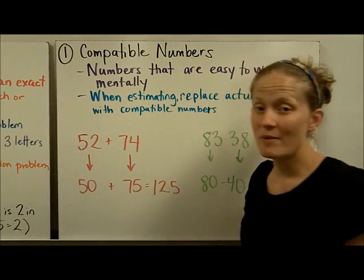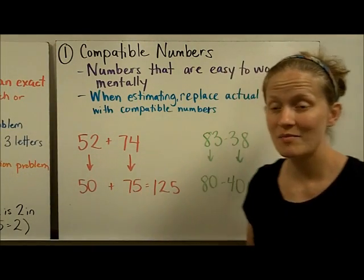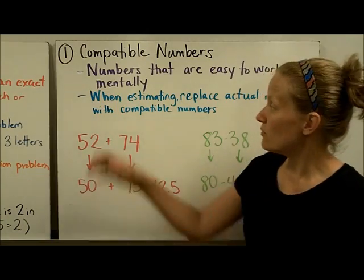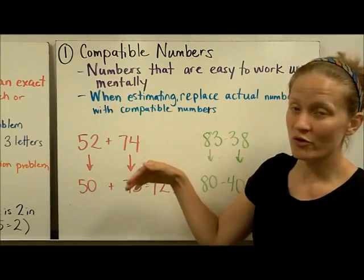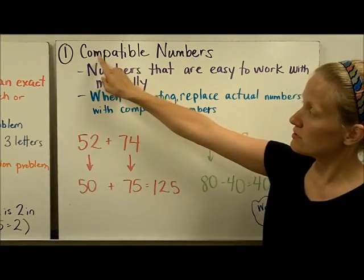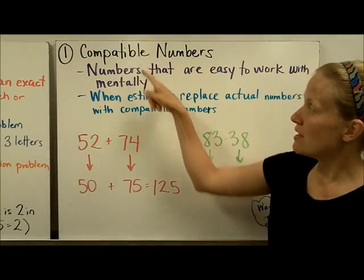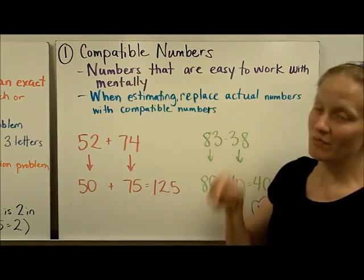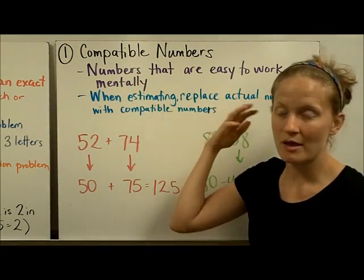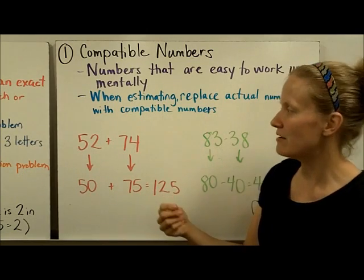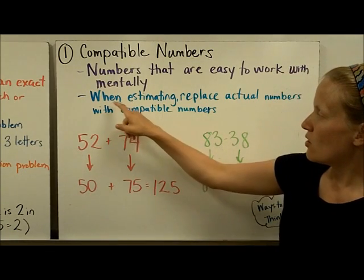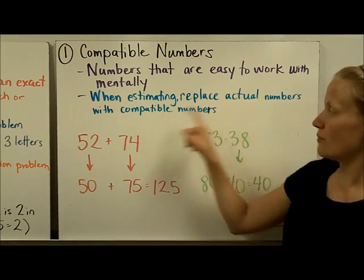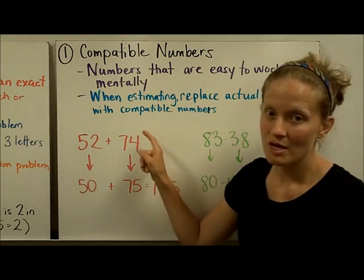We're going to talk about three different ways that you can estimate sums and differences, and we will go through one board from each of those. The first one is compatible numbers. Compatible numbers are numbers that are easy to work with mentally — in your mind without having to write something down every time. When you are estimating, replace actual numbers with compatible numbers.